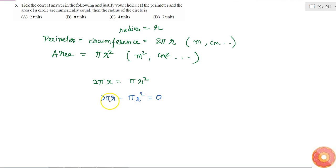If I take πr common from both, I get πr(2 - r) = 0. Or, if I multiply by -1, I get πr(r - 2) = 0.